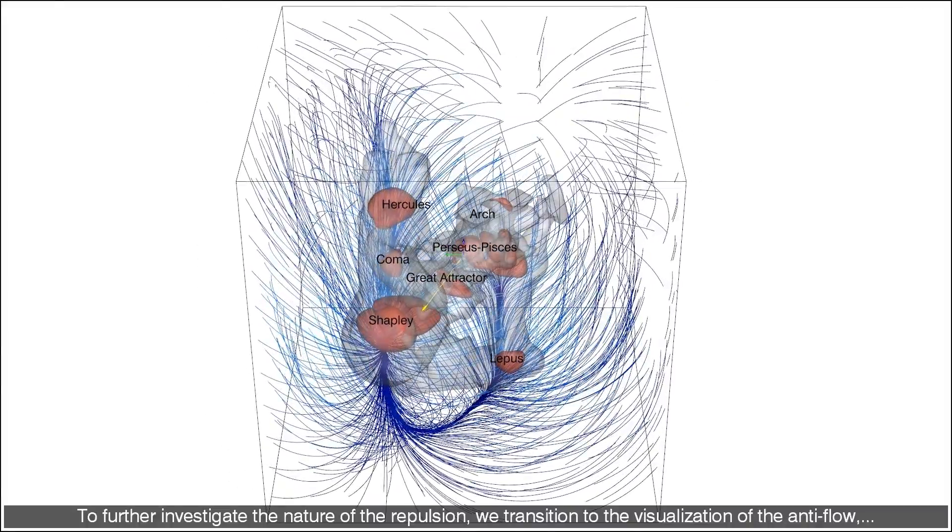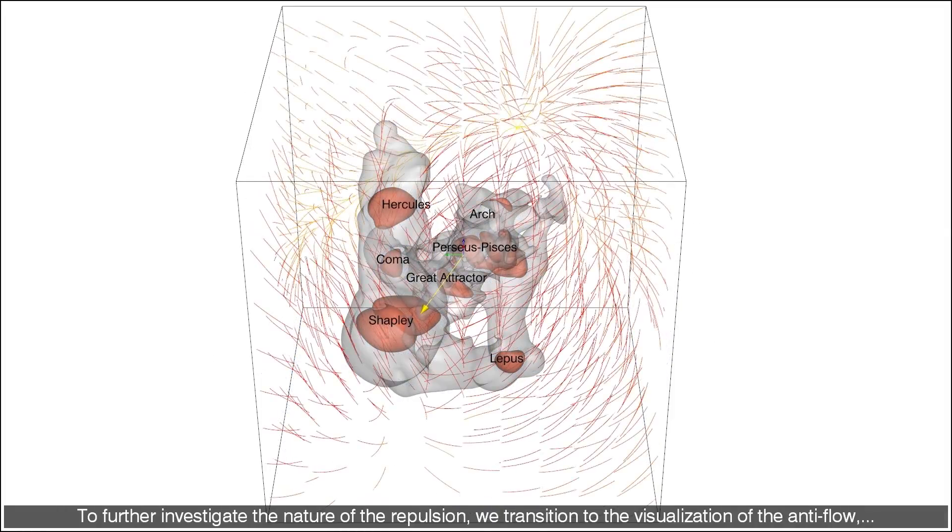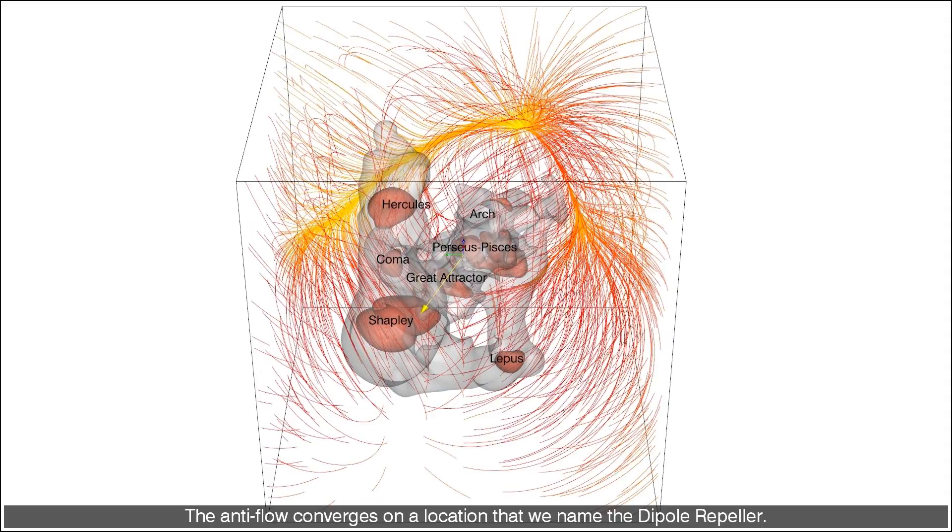To further investigate the nature of the repulsion, we transition to the visualization of the anti-flow, namely the negative of the flow. The anti-flow converges on a location that we name the dipole repeller.